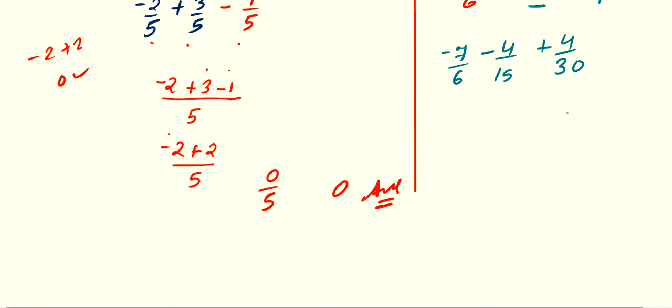Okay. Now, the denominator is different: 6, 15 and 30. So, now find LCM. 6, 15 and 30.